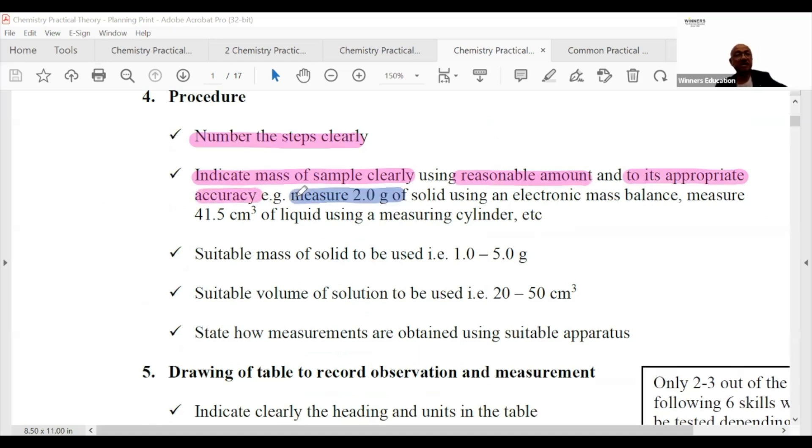Measure 2.0 gram of solid using the electronic mass balance, or measure 41.5 cm³ of liquid using the measuring cylinder. Make sense? So if you use a burette, it will be to two decimal places. Use a pipette to one decimal place.